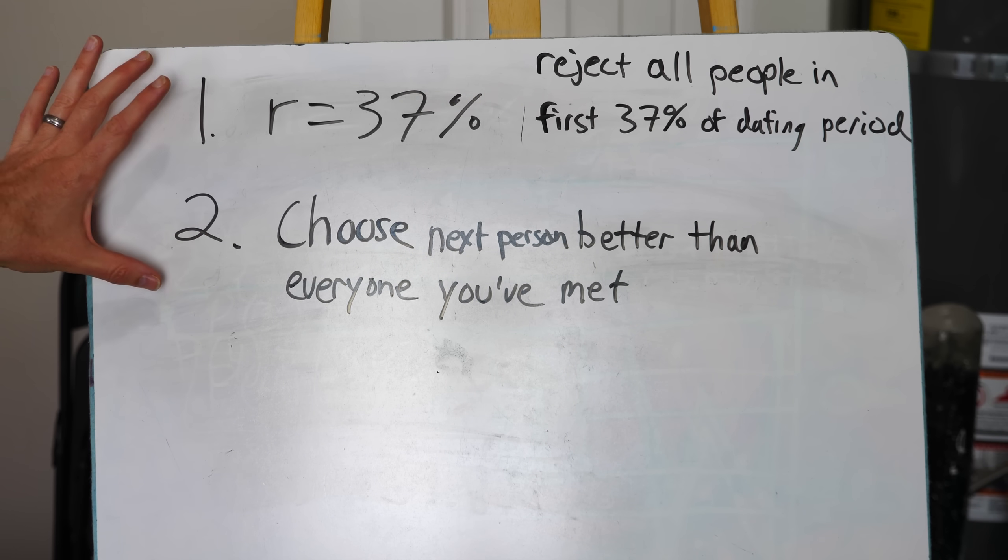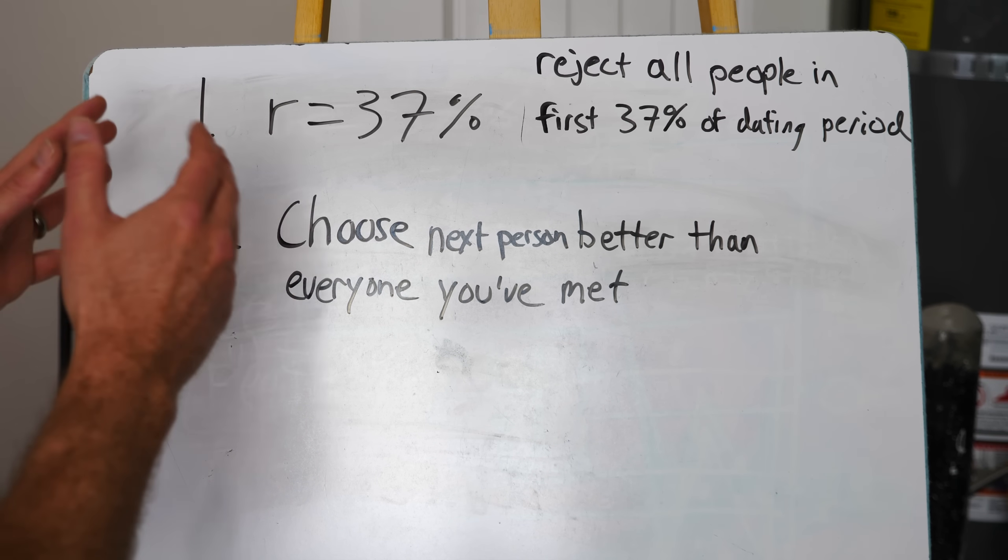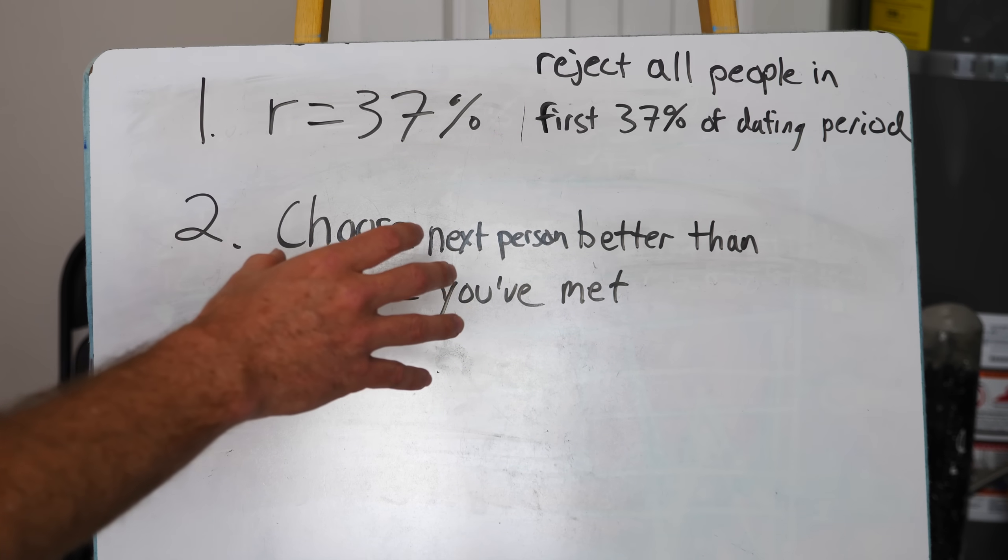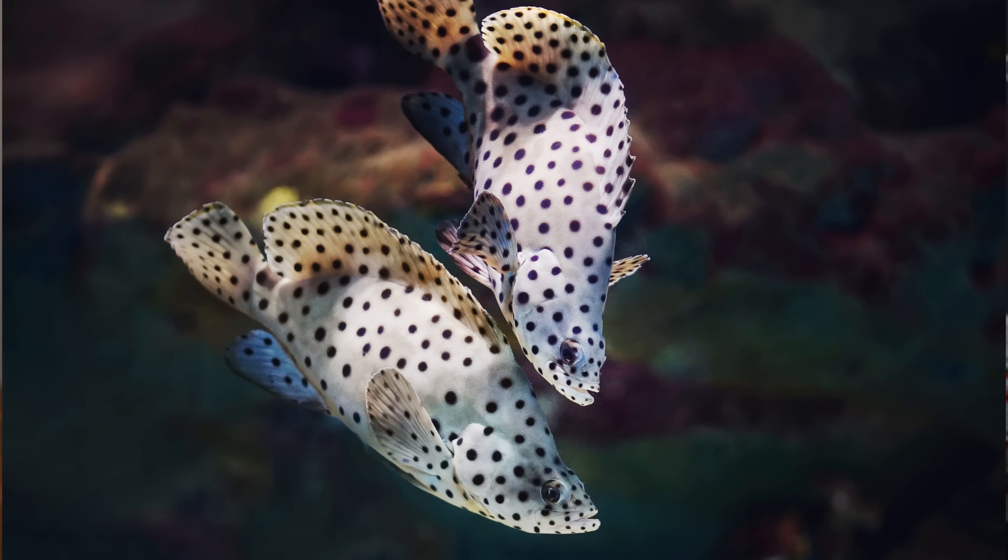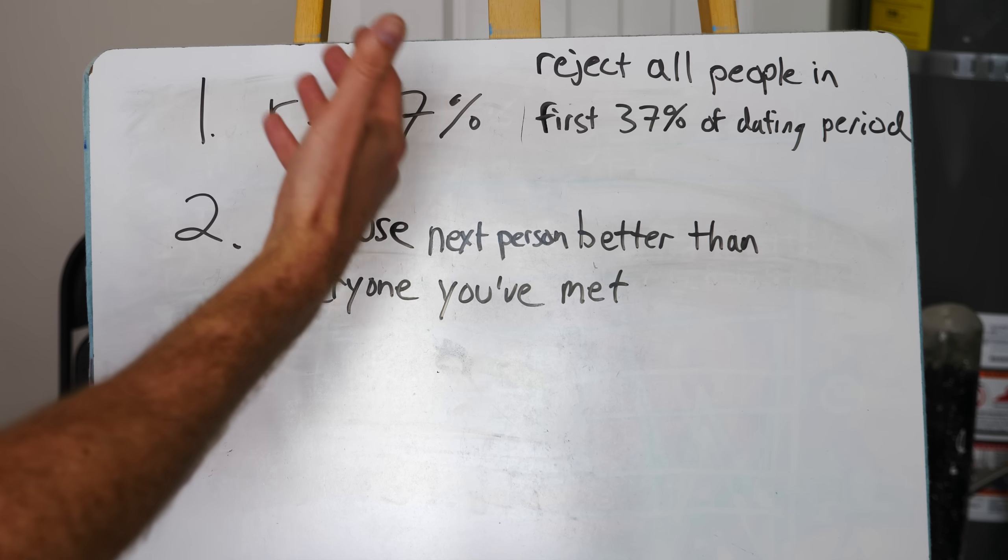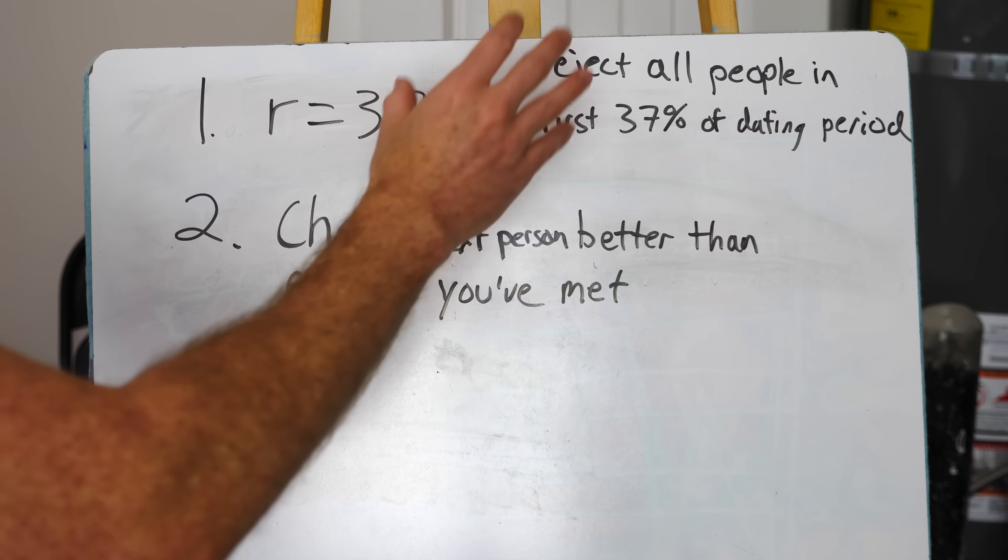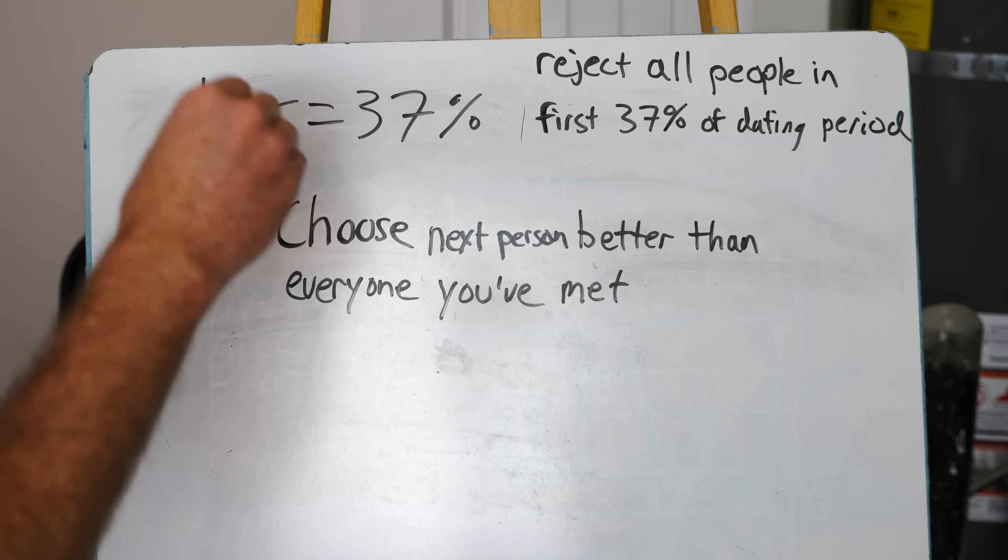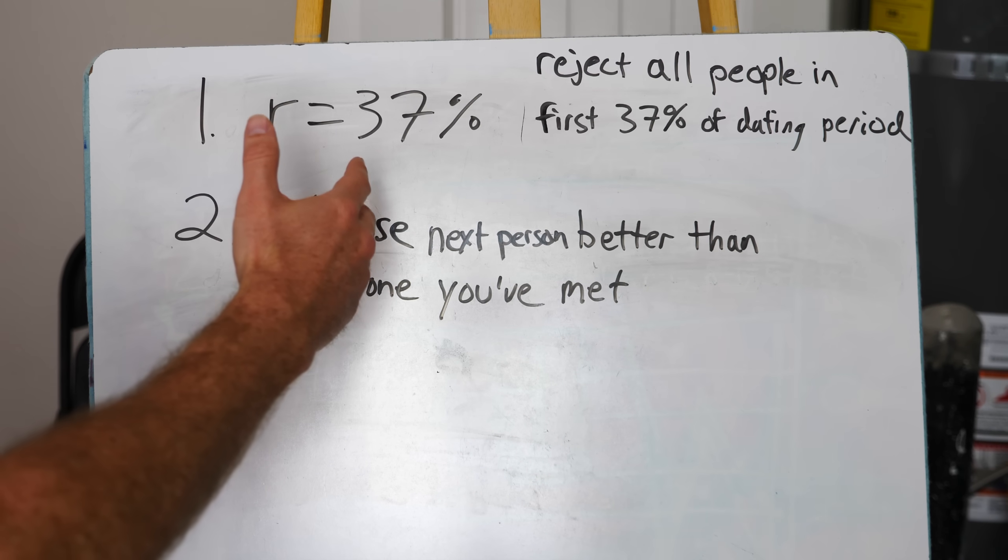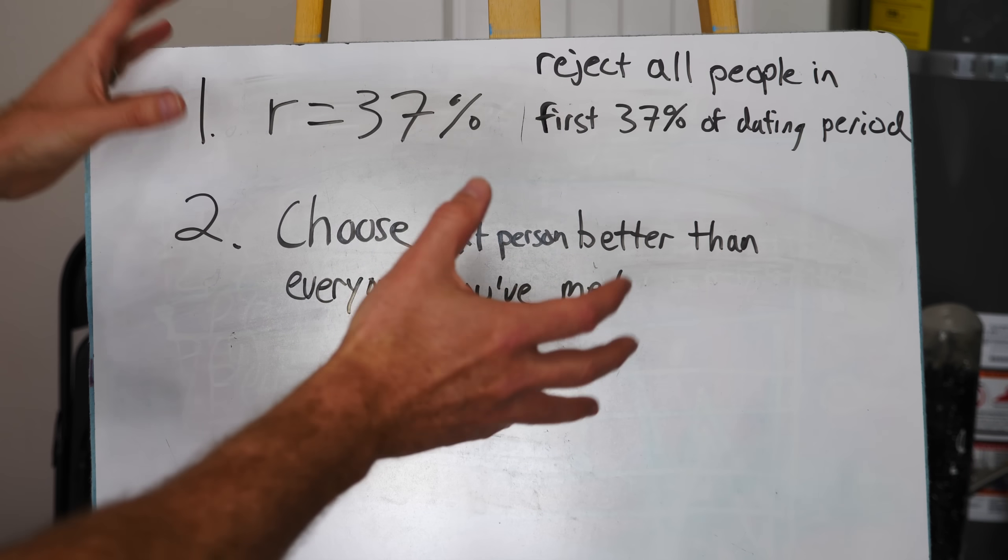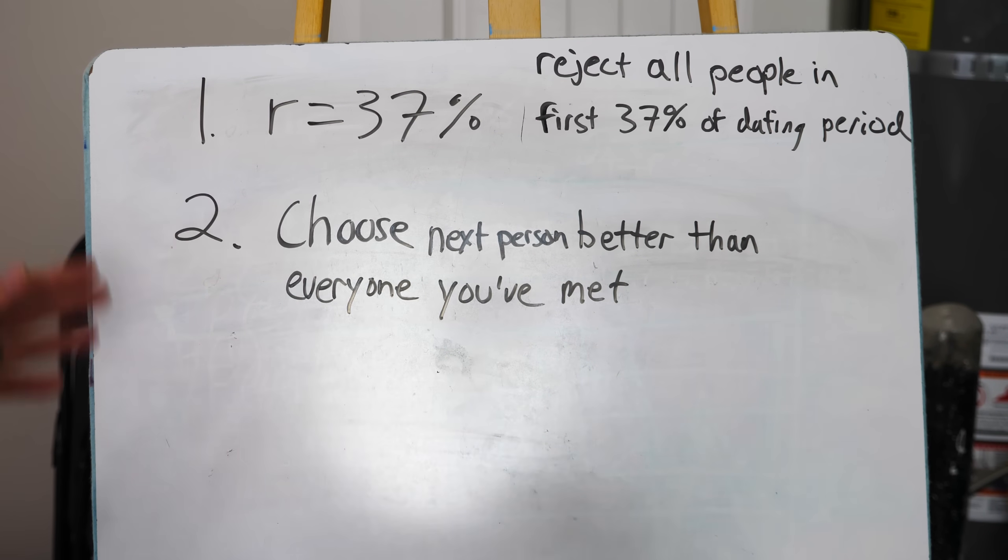And then after that you should choose the next person better than everyone that you've met up to that point. And according to the optimal stopping theory, this says that this gives you the highest probability of finding the best person that you could have found in that dating period. Now what's interesting about this theory is there are actually certain fish that live in the wild that through evolutionary means have already acquired this same type of sense for dating or mating. And what these fish do is they reject every possible fish that turns up in the first 37% of mating season. And then after that they just pick the next fish that comes along that's bigger and better than the fish that they had seen before that point. So somehow nature has already collapsed to understand that this is the best possible probability of finding the perfect match for you during a specific time period.